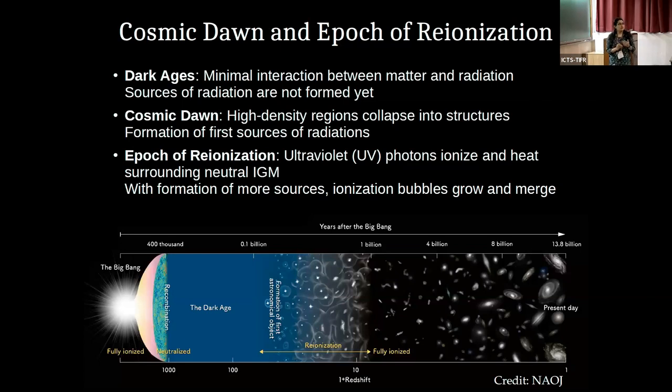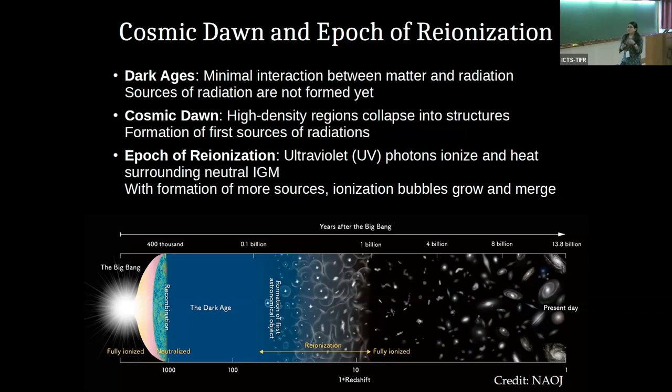So very briefly, the history of the universe, which is the focus of my talk. After the epoch of recombination, we have this period called dark ages when the neutral medium started, when neutral baryons started collapsing into the dark matter halos. And this collapsed regions form the first sources of radiation. So this is called the epoch of cosmic dawn, when the first sources of radiations are formed. And after that, these first sources started ionizing and heating up their surrounding medium. So this is called the epoch of reionization.